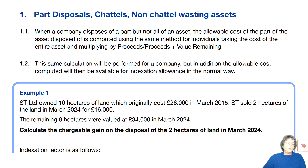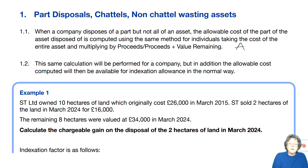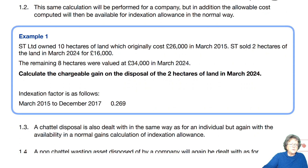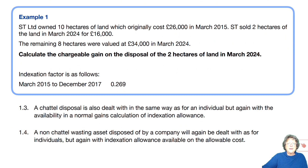When a company disposes of an asset, but not all of it, the allowable cost needs to be apportioned. We use A over A plus B as the fraction. It's the same calculation for individuals as it is for companies, except that individuals don't get indexation allowance — they get the annual exempt amount, which is slightly different.